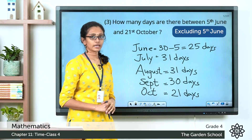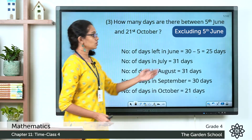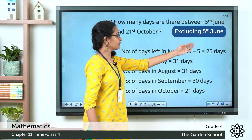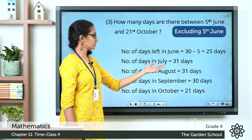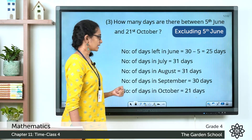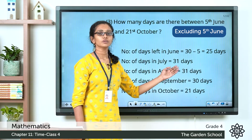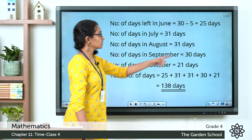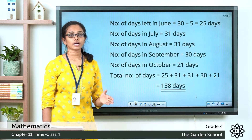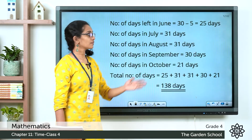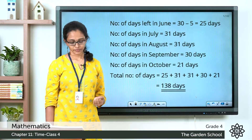Just add all the number of days. Days left in June: 30 minus 5 equals 25 days. July: 31 days. August: 31 days. September: 30 days. October: 21 days. The total is 25 plus 31 plus 31 plus 30 plus 21, which equals 138 days. Between 5th June and 21st October there are a total of 138 days. I hope this is clear to you.